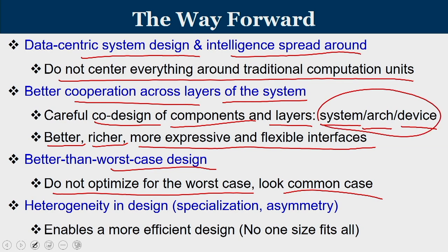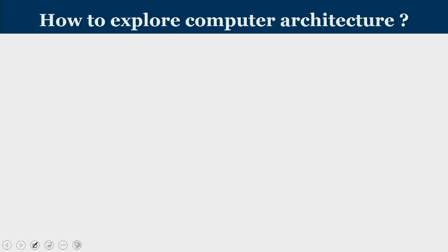Can we have specialized hardware? Let the hardware be asymmetric — it enables more efficient design. No one size is going to fit all. In this way, future architectures should be more intelligent in nature. Now, some of you may be thinking: after learning a course like advanced computer architecture over the last 8 weeks, what is the way forward?